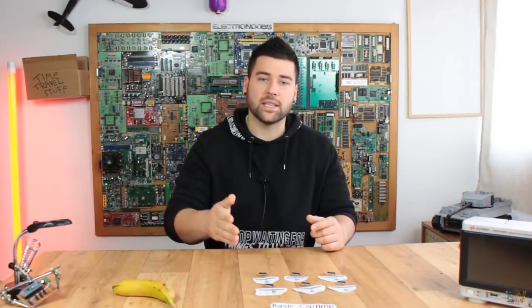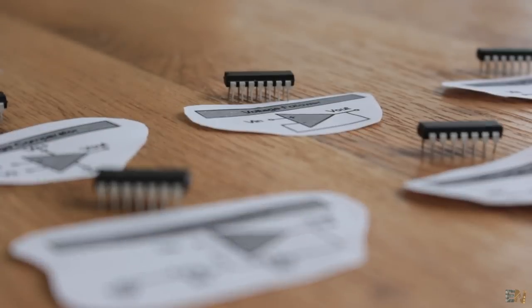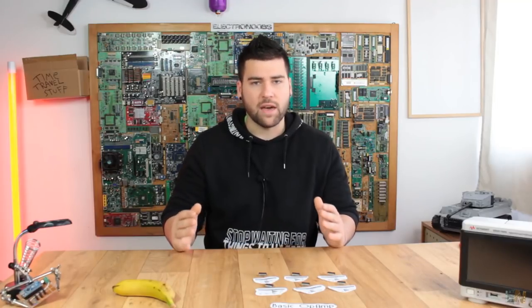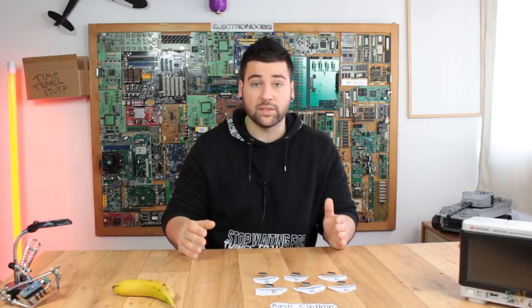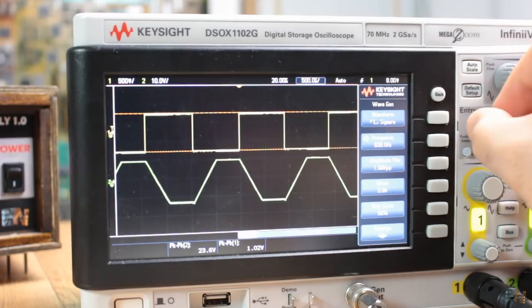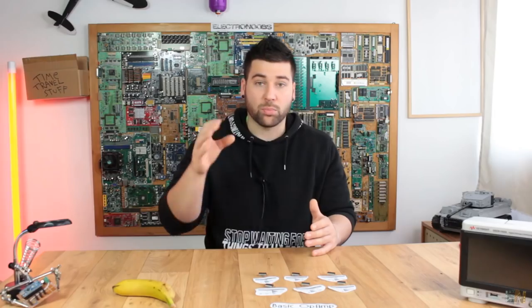So guys, using this IC, we will take a look over the comparator configuration, the voltage follower and why we need it, then the non-inverting and the inverting configuration, and finally take a short look over the derivative and integral configuration of these op-amps. Well guys, let's prepare our breadboard and see some basic examples. So let's get started.